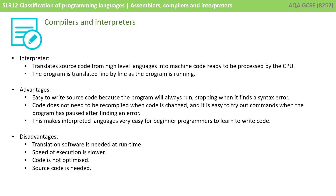With an interpreter, we translate the source code from a high-level language into machine code ready to be processed by the CPU, just like compiled code, but the program is translated line by line as it runs. The advantage is it's easy to write source code because the program will always run, stopping when it finds the first syntax error. Code does not need to be recompiled when changed, and it's easier to try out commands when the program pauses after finding an error. This makes interpreted languages very easy for beginner programmers. The disadvantage is translation software is needed every time the program runs, causing slower execution, the code isn't optimized, and the original source code is needed.